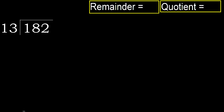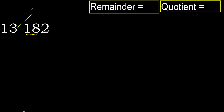182 divided by 13. 1 is less, therefore next. 18 is not less, therefore with 18: 13 multiplied by which number is nearest to 18 but not greater?